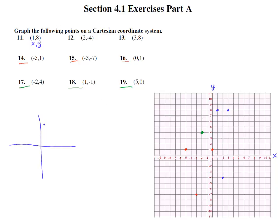18 is positive 1 and then negative 1, so it's down here. And then 19 is 5 on the X and 0 on the Y, so we don't go up or down and we stay right there.